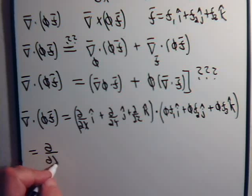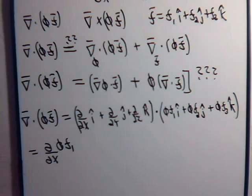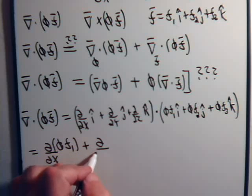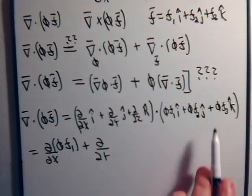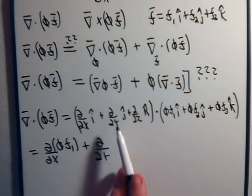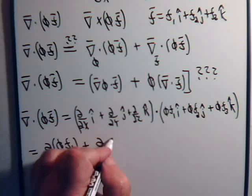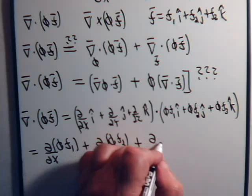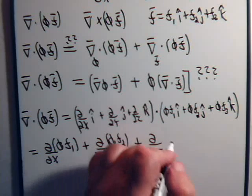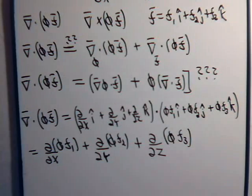partial with respect to x of phi times f1 plus the partial with respect to y as we continue taking our dot product, j dot j, that's 1, partial with respect to y of phi f2 plus the partial with respect to z of phi f3.